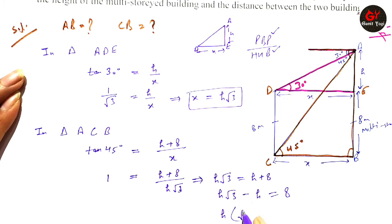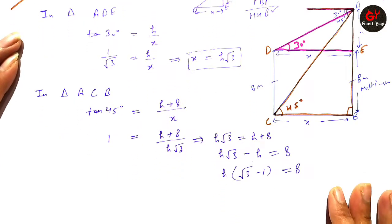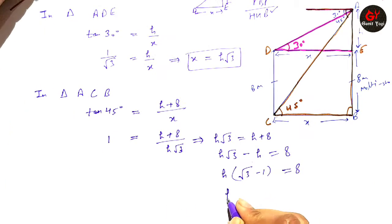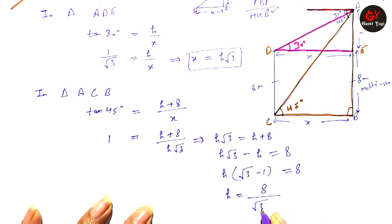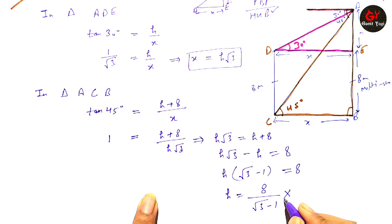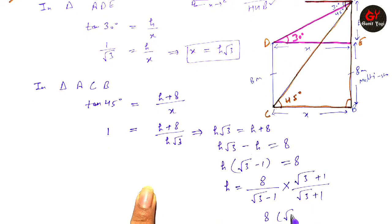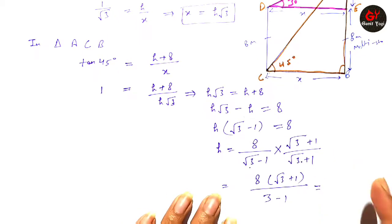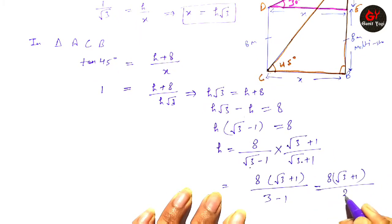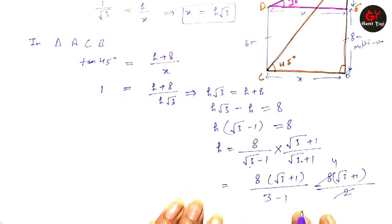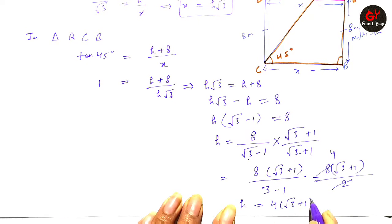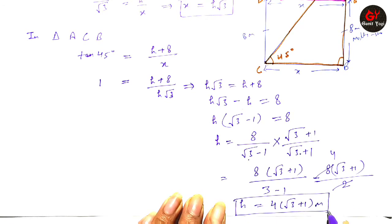Substituting x = h√3, we get h√3 = h + 8, so h√3 - h = 8, taking h common: h(√3 - 1) = 8, so h = 8/(√3 - 1). Rationalizing by multiplying by (√3 + 1)/(√3 + 1), we get h = 8(√3 + 1)/(3 - 1) = 8(√3 + 1)/2, so h = 4(√3 + 1) meters.